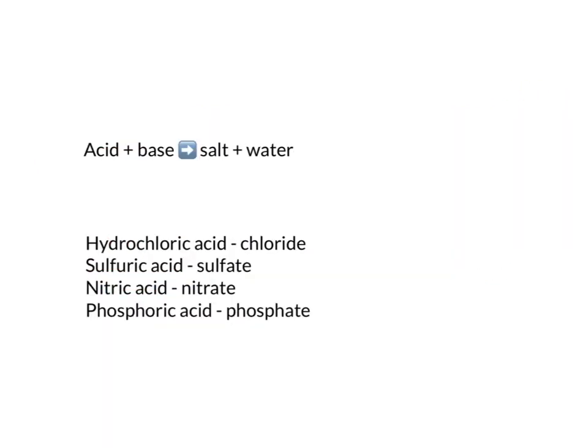In summary, you need to remember that acid plus base, also known as alkali, gives us salt and water. The name of that salt comes from the acid and the base being used. If it's hydrochloric acid, the salt will be something chloride. Sulfuric acid gives something sulfate. Nitric acid gives something nitrate. Phosphoric acid gives something phosphate. The first part of the salt's name will be the metal, and that metal comes from the name of the base. Hope that makes sense and good luck.